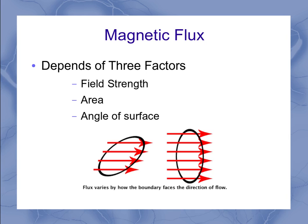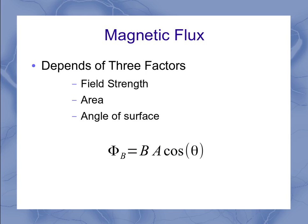We can wrap all of these concepts up into a single equation that says the flux is equal to B A cosine theta. So let's take a closer look at that equation.